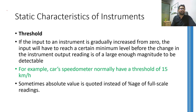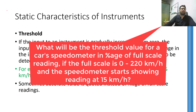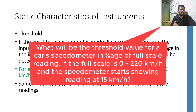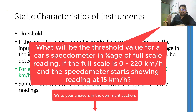Normally, you can find the threshold value written as a percentage of full scale in the datasheet. Can you figure out the threshold value of a car's speedometer as a percentage of full scale? If the full scale is from 0 to 200 km/h and the pointer starts showing a value around 15 km/h, you can write your answer in the comment section below.